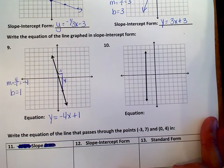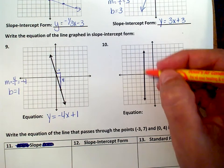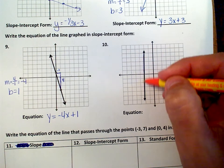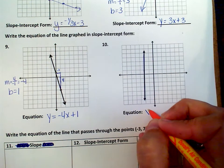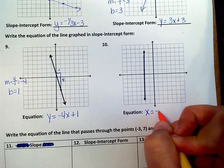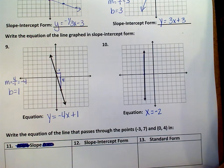Now, number 10, this is a vertical line. The vertical line crosses one axis, that is the x-axis. So it's going to be x equals where it crosses on the x-axis, which is negative 2. So x equals negative 2.